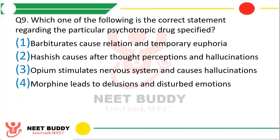Question number 9: Which one of the following is the correct statement regarding a particular psychotropic drug specified? Option 1: Barbiturates cause relaxation and temporary euphoria. Option 2: Hashish causes altered thought perceptions and hallucinations. Option 3: Opium stimulates the nervous system and causes hallucinations. Option 4: Morphine leads to delusions and disturbed emotions. The correct answer is Option 2; hashish causes altered thought perceptions and hallucinations.